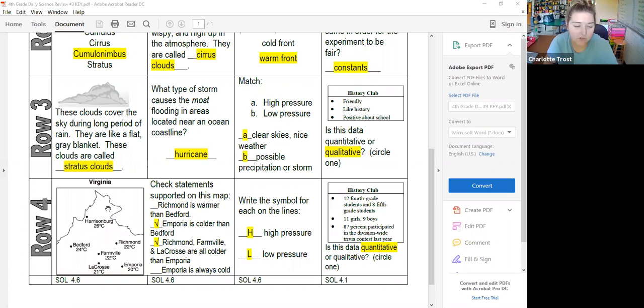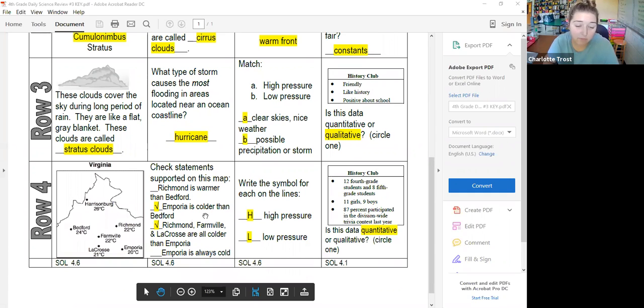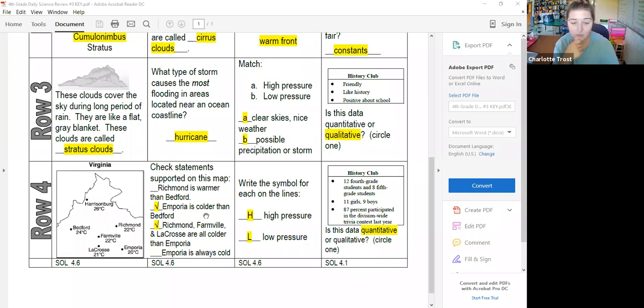We had to look at this map of Virginia with some temperatures and decide which ones were true. There's actually only one true statement. The answer key is wrong. The only one true is that Emporia is colder than Bedford. Richmond, Farmville, and La Crosse are not colder. They're actually warmer than Emporia. So ignore that one. The only one correct is the second one.